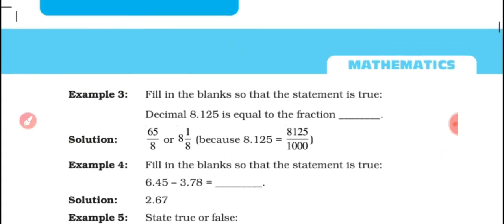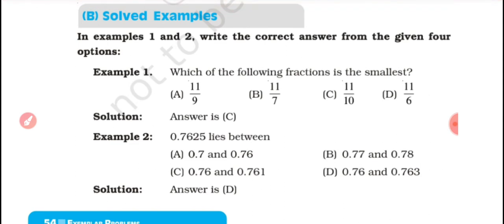Now we are going to discuss some examples based on the concepts discussed. Example 1: Which of the following fractions is the smallest — 11/9, 11/7, 11/10, or 11/6? All numbers given are improper fractions. Looking at 11/10, since it is a decimal fraction — 11/10 equals 1.1 — that is why we say it is the smallest fraction.